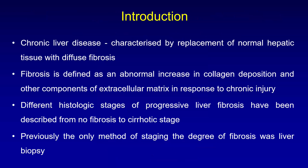Chronic liver disease is characterized by replacement of normal hepatic tissue with diffuse fibrosis. Fibrosis is defined as an abnormal increase in collagen deposition and other components of extracellular matrix in response to chronic injury. Different histological stages of progressive liver fibrosis have been described, from no fibrosis to the cirrhotic stage. Previously, the only method of staging the degree of fibrosis was liver biopsy.